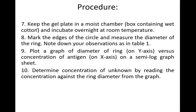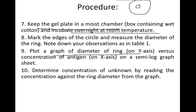Keep the gel plate in a moist chamber and incubate overnight at room temperature. Then mark the edges of the circles and measure the diameter of the rings. Plot a graph of ring diameter versus antigen concentration. The y-axis consists of the diameter of the precipitin ring formed around the antigen, and the x-axis shows antigen concentration. The unknown concentration is determined by reading against the ring diameter.